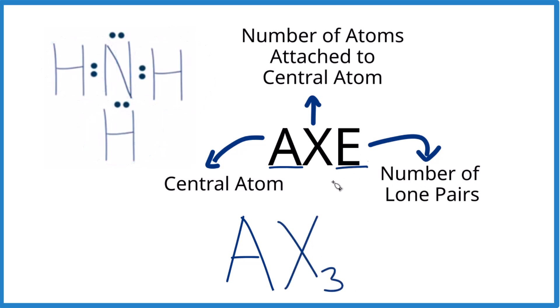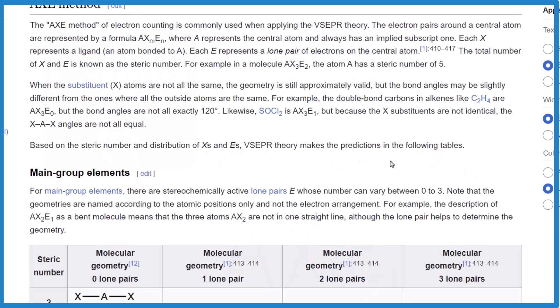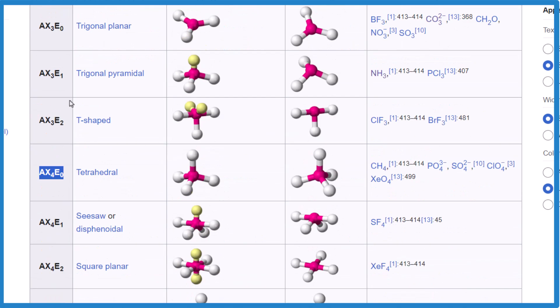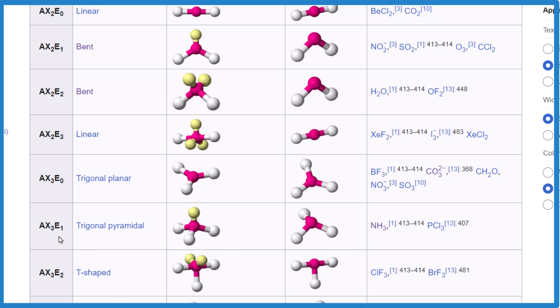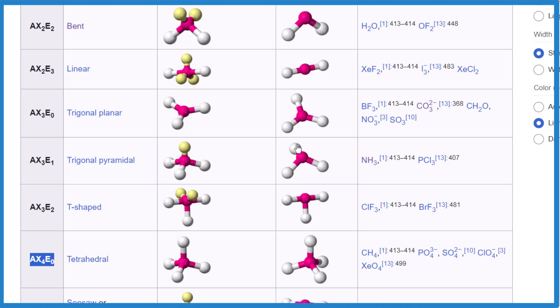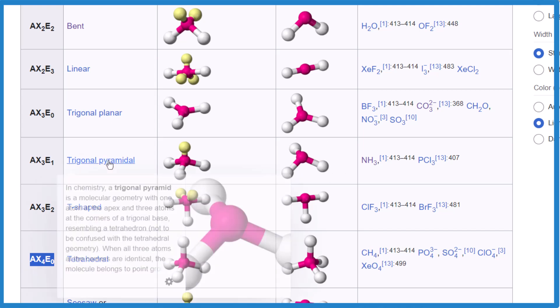E is the number of lone pairs. We have one lone pair, so it's E1. We end up with AX3E1. You would look this up, or probably have it memorized that this is trigonal pyramidal. Let's look it up though. This is on Wikipedia; your teacher may give you a chart as well. We're looking for AX3E1, right here, and it says it's trigonal pyramidal. You can see the shape right here. This is the molecular geometry. They're showing electron geometry as well, but this is the molecular geometry using the AXE notation.